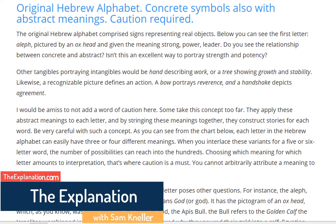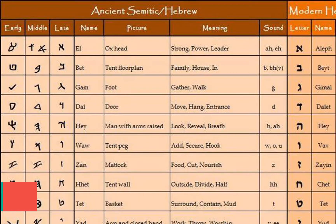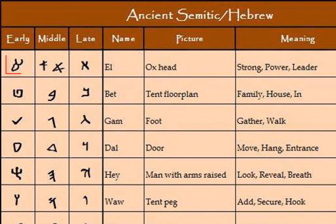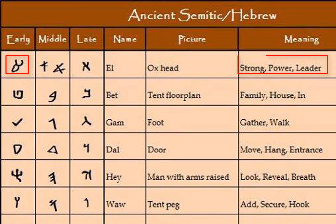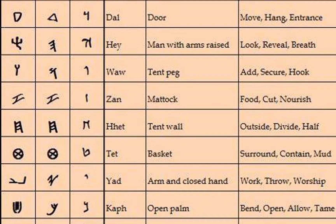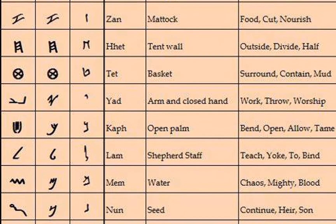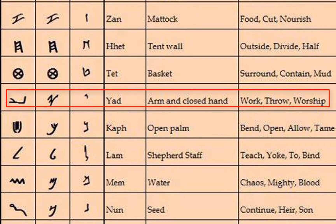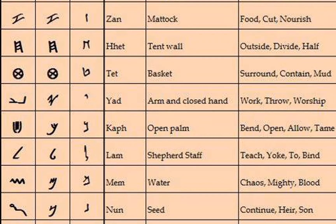The original Hebrew alphabet comprised signs representing real objects. Below you can see the first letter, Aleph, pictured by an ox head and given the meaning strong, power, leader. Do you see the relationship between the concrete and abstract? Isn't this an excellent way to portray strength and potency? Other tangibles portraying intangibles would be a hand describing work, or a tree showing growth and stability.